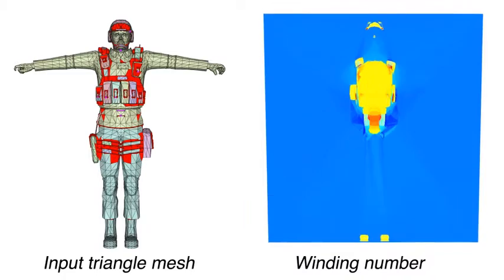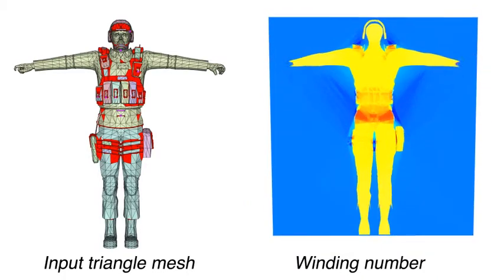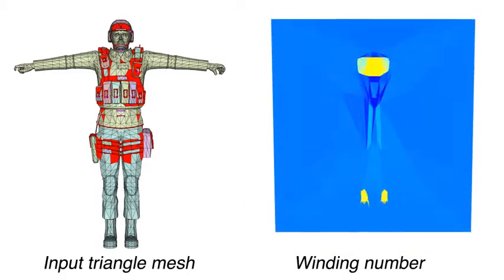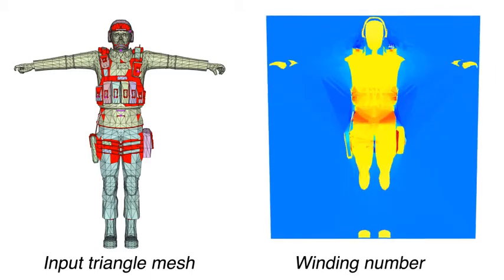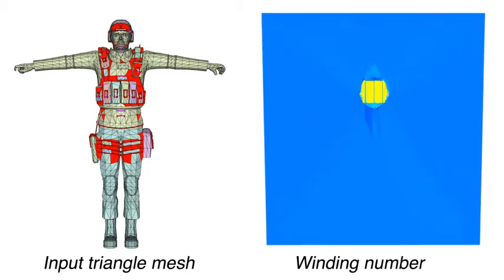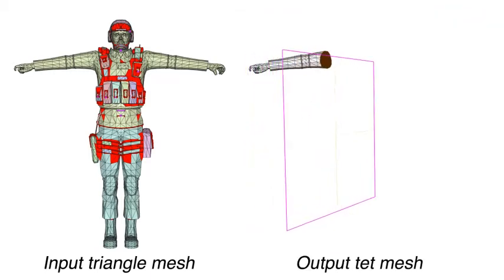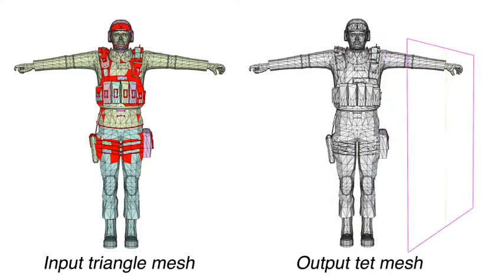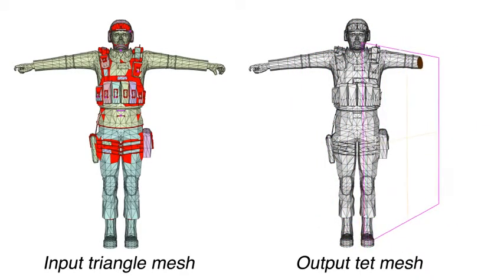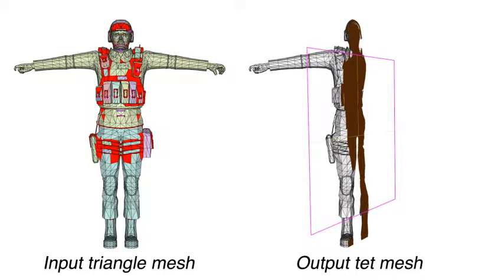We robustly determine inside from outside by generalizing the winding number for arbitrary triangle meshes. Relying on the unique properties of this function, we segment a constrained Delaunay tessellation, or CDT, to recover the shape's volume, exactly meeting the input mesh.